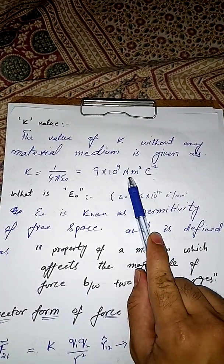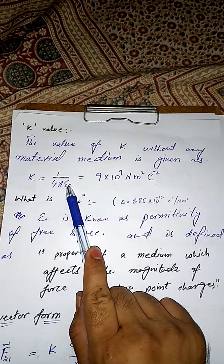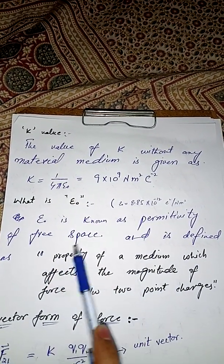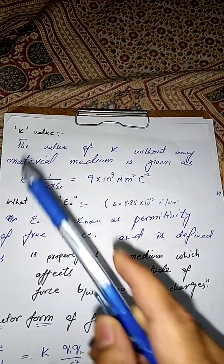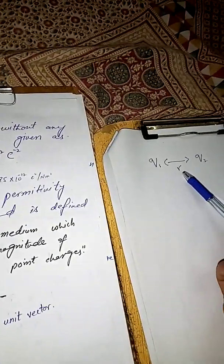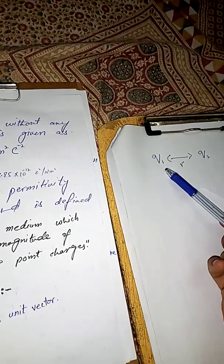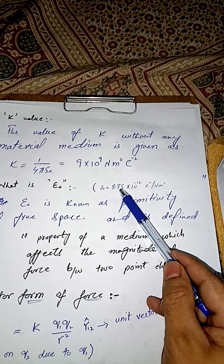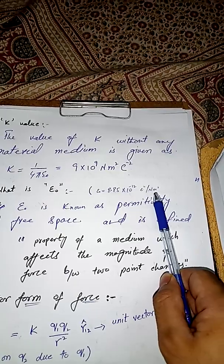If we change the units, the value of k will definitely change. Here, ε₀ is known as the permittivity of free space. We can obtain this value from Coulomb's Law when there is no material medium between the charges — when air or vacuum is the medium. In that case, the value of ε₀ is 8.85 × 10⁻¹² C²/(N·m²).